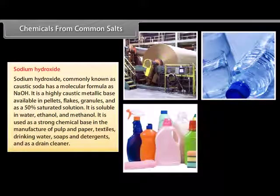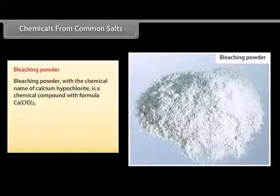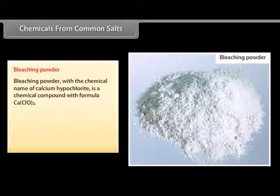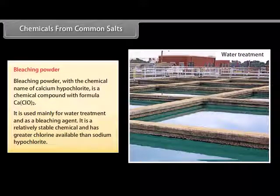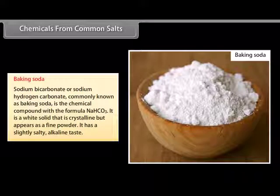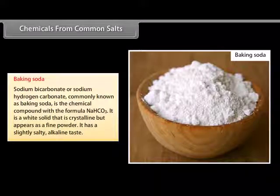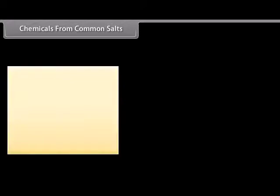Bleaching powder, with the chemical name calcium hypochlorite, is a chemical compound with the formula CaClO2. It is used mainly for water treatment and as a bleaching agent. It is a relatively stable chemical with greater available chlorine than sodium hypochlorite. Baking soda — sodium bicarbonate, or sodium hydrogen carbonate — has the formula NaHCO3. It is a white solid that is crystalline but appears as a fine powder, with a slightly salty alkaline taste.